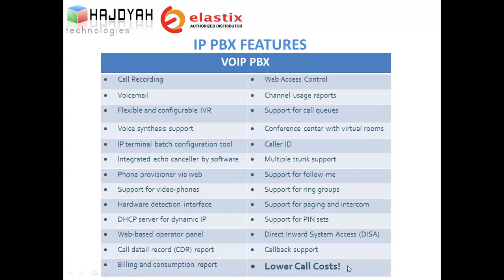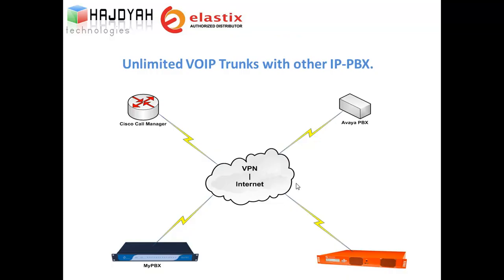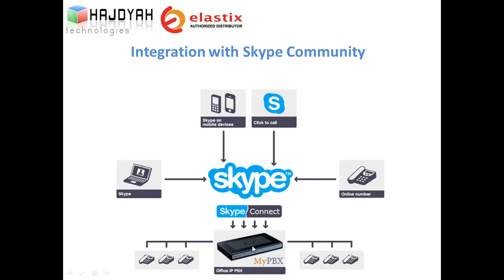Lower call costs. Elastic PBX helps your company reduce call costs in two ways. If you have multiple offices, you can connect branch offices via internet or VPN and make free calls between Elastic systems at different branches. Elastic also works with other telephony systems like Cisco, Avaya, or Nortel, and is compatible with Skype, allowing international calls through Skype and the ability to receive calls from tens of millions of Skype users.